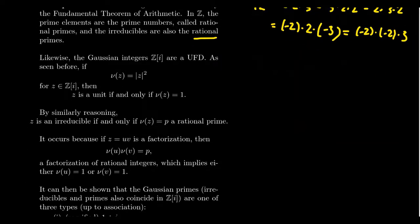Let's talk about another integral domain: the Gaussian integers, Z adjoined i. I claim this is also a unique factorization domain, though I won't prove it in this video. Assuming we have a UFD, we might be interested in who are the irreducible elements — the prime elements. We'll see shortly that in a unique factorization domain, irreducible elements and prime elements are actually the same thing. So what are the Gaussian primes? This is a major focus of algebraic number theory.